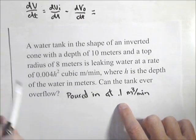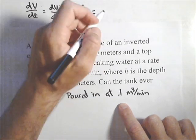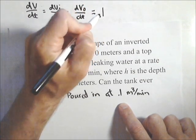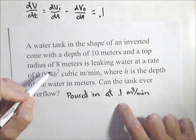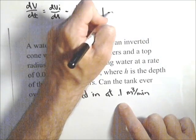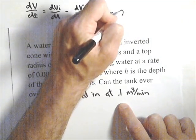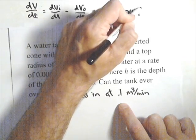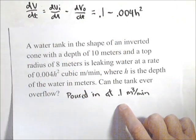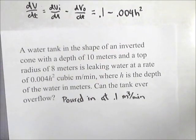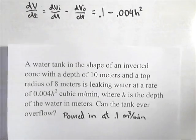I kind of gave the last one because I forgot to put it in the original, but it's coming in at 0.1 cubic meters per minute and it's going out at 0.004h² cubic meters per minute. So that would be our dV/dt and that's given.